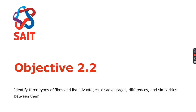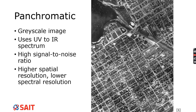Moving on to Objective 2.2: identify three types of films and list their advantages, disadvantages, differences, and similarities. I'm going to introduce them in this lecture — otherwise we could sit here forever. In class we'll talk more in detail about advantages, disadvantages, and comparing and contrasting them. But in this particular lecture, we're going to talk about just really what they are.